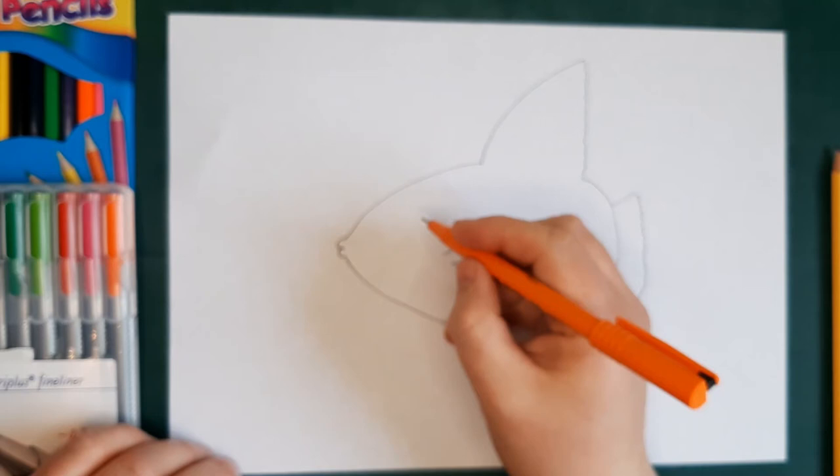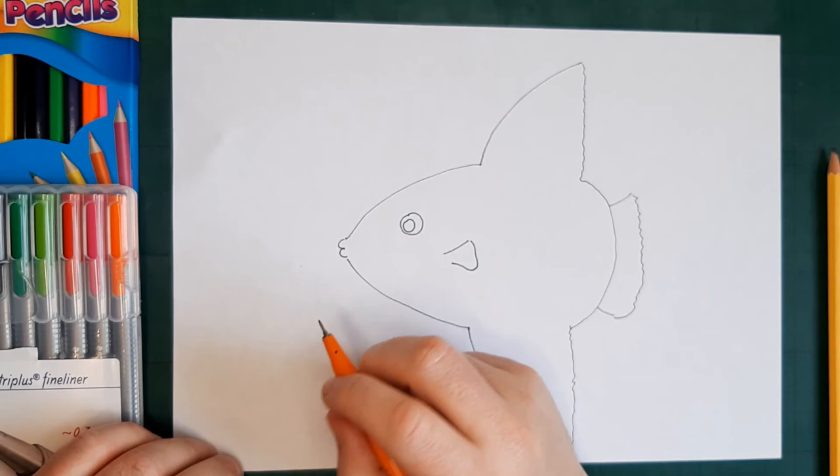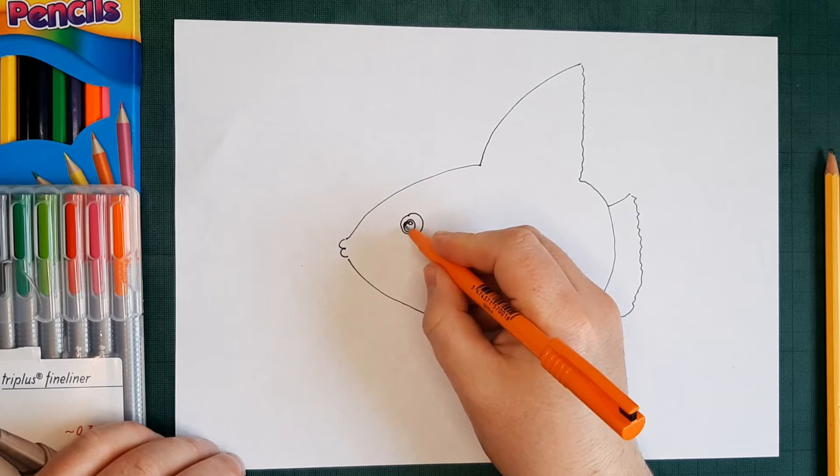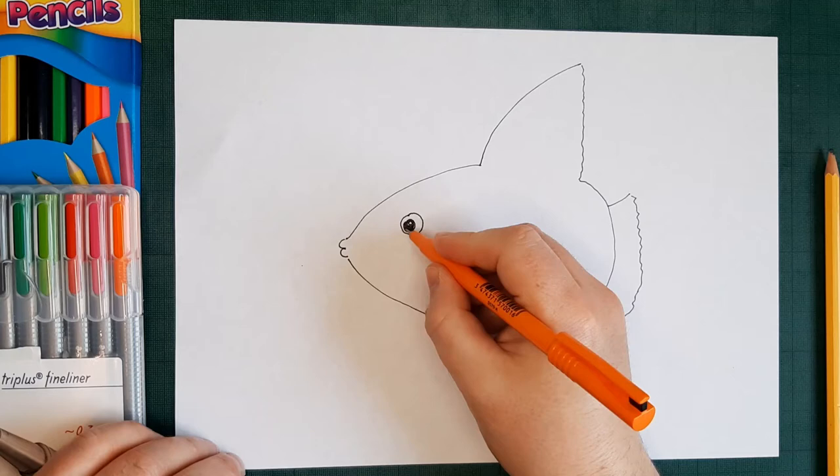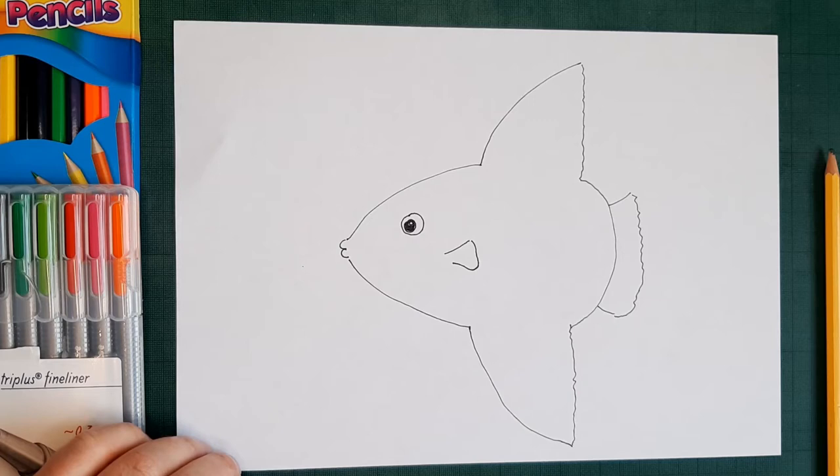And then we're going to put in his eye. So a big round circle for his eye and inside that we're going to draw another circle, and inside that again we're going to draw another little circle. And then we're going to fill in his pupil. I'm going to leave that last little circle that we did white which gives him a little bit of life.